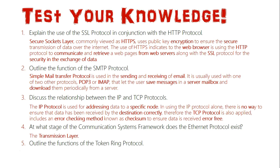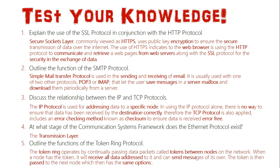Question five: outline the function of the token ring protocol. The token ring operates by continually passing data packets known as tokens between nodes. When a node has the token, it receives all data addressed to it and can also send its own messages, but only while holding the token. The token is then passed to the next node, which has the same options of reading data addressed to it and sending its own messages.